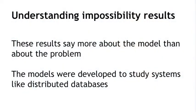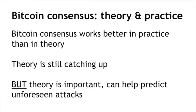These impossibility results were proved in a model intended for distributed databases, and that model doesn't carry over well to Bitcoin's setting. The results tell us more about the model than about the problem itself. Bitcoin violates many of the assumptions in these models, and as a result, consensus in Bitcoin ironically works better in practice than in theory. The theory still matters — for example, it can help predict unforeseen attacks and provide strong guarantees about consensus and security in Bitcoin.